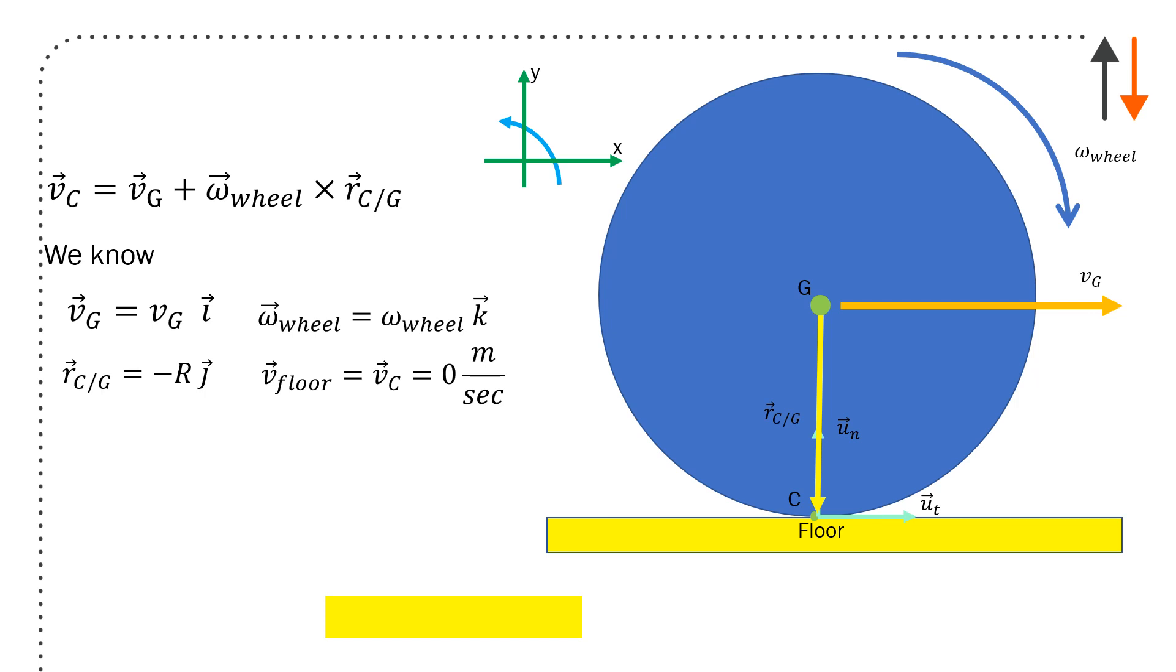We know that velocity of g, because it's at the center, is going to be in the i direction. Omega of the wheel is going to be k, and in this case it's a negative value. And rc with respect to g is going to be negative r because it goes from g to point c. Velocity of floor equals velocity of c, which equals zero. So I can say zero equals velocity of g in the i plus omega of the wheel k cross with minus rj. I end up with velocity of g in the i direction plus omega of the wheel times r equals zero. So omega of the wheel is going to be minus vg, and that's sort of how I draw it in this figure, but it will be a negative value because it's clockwise.